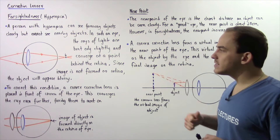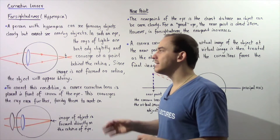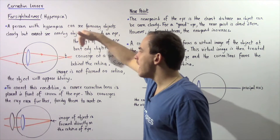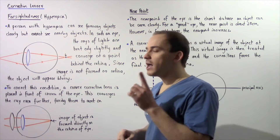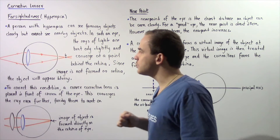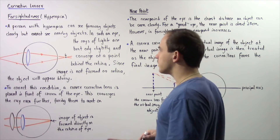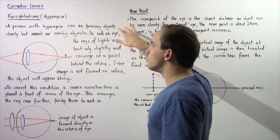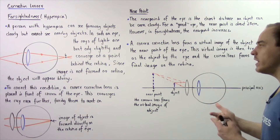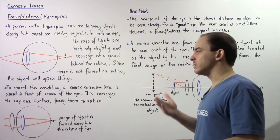In a farsighted eye, the rays of light entering the cornea and the lens bend very slightly, and those rays of light converge at a point found behind the retina. Because the image is not formed at the retina, objects found very close to the eye will appear blurry. So in an eye with hyperopia, the rays of light are bent only slightly, converge behind the retina, and the object appears blurry.